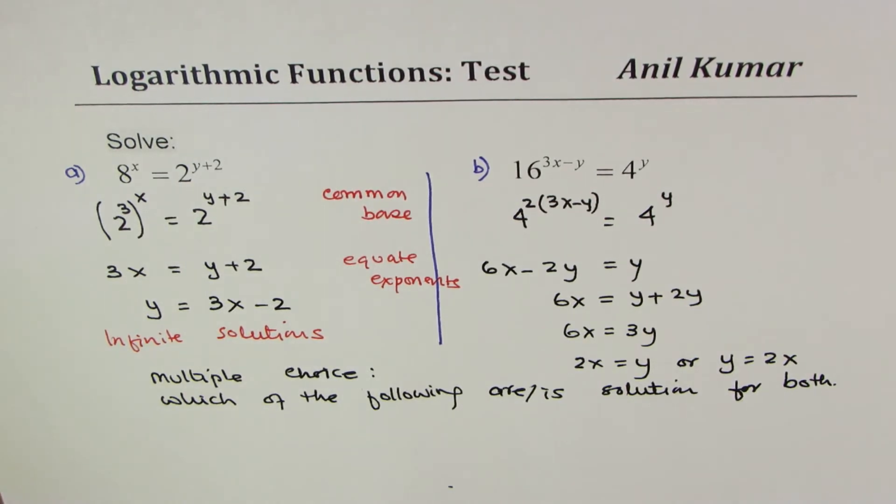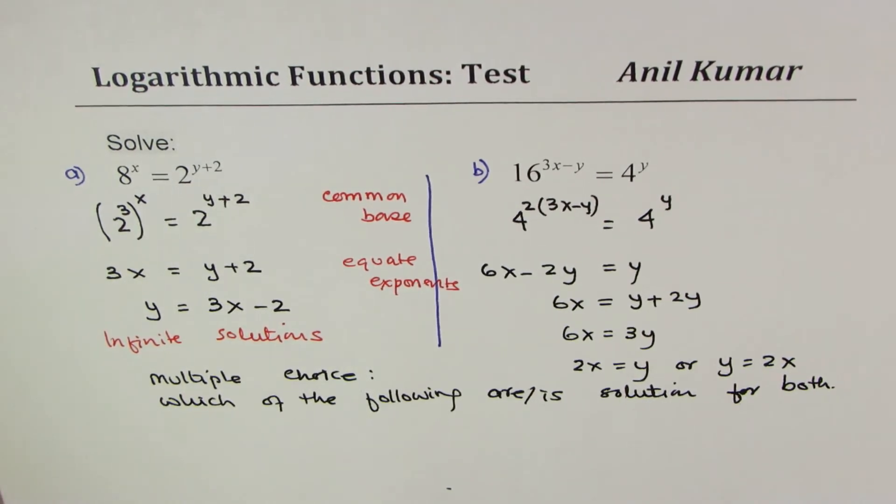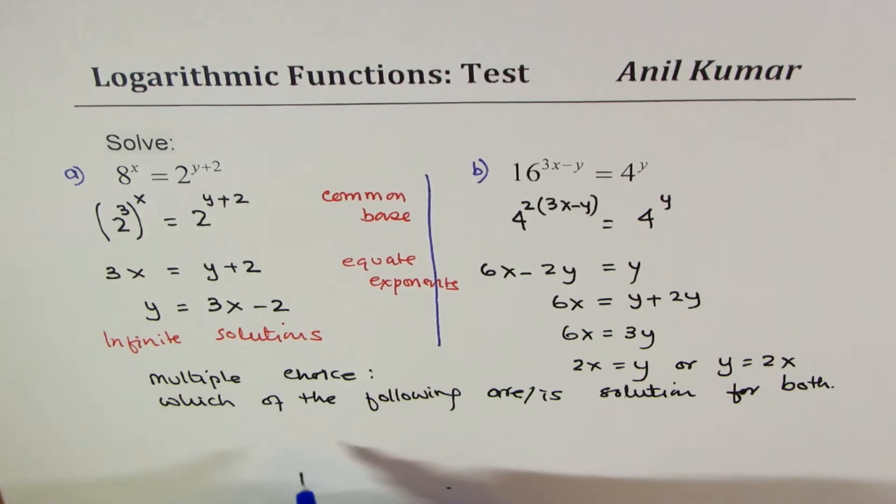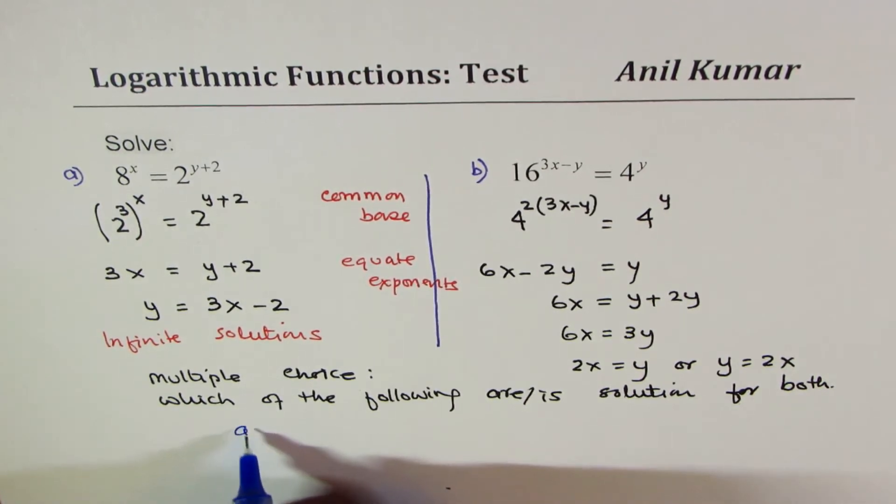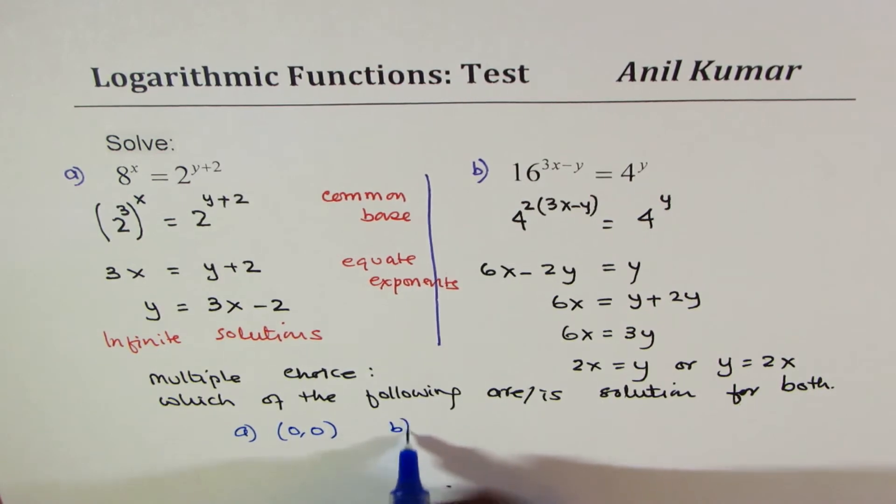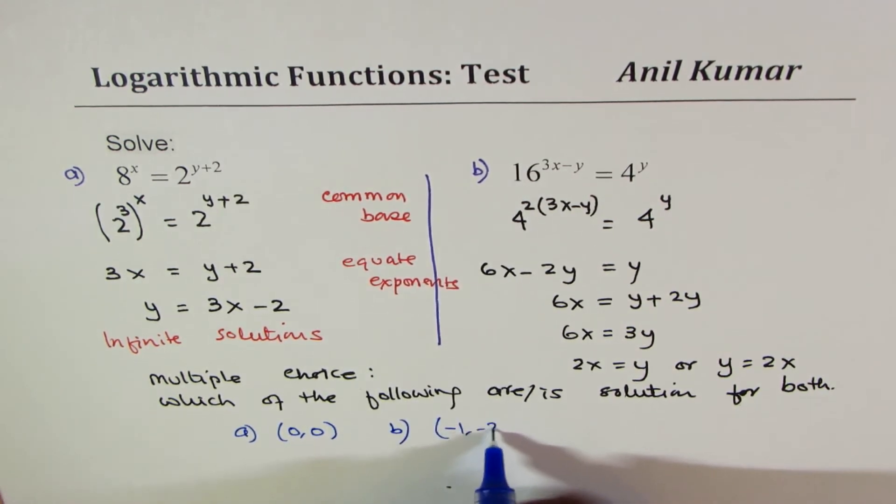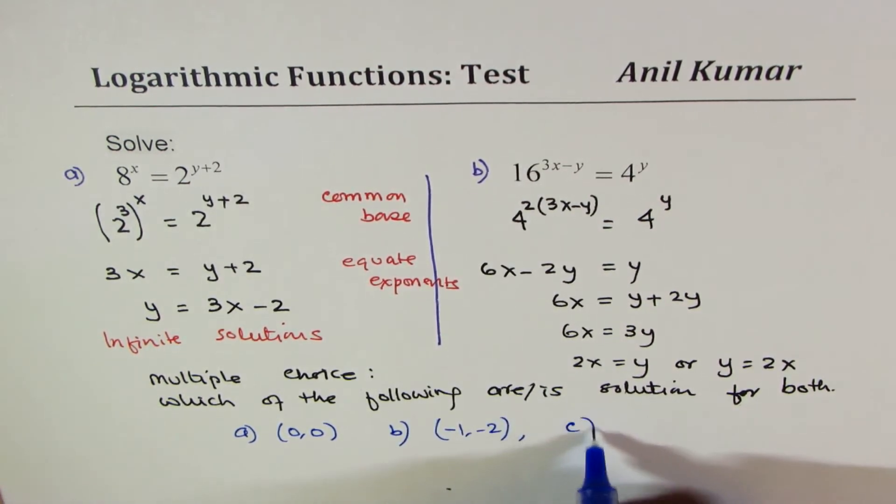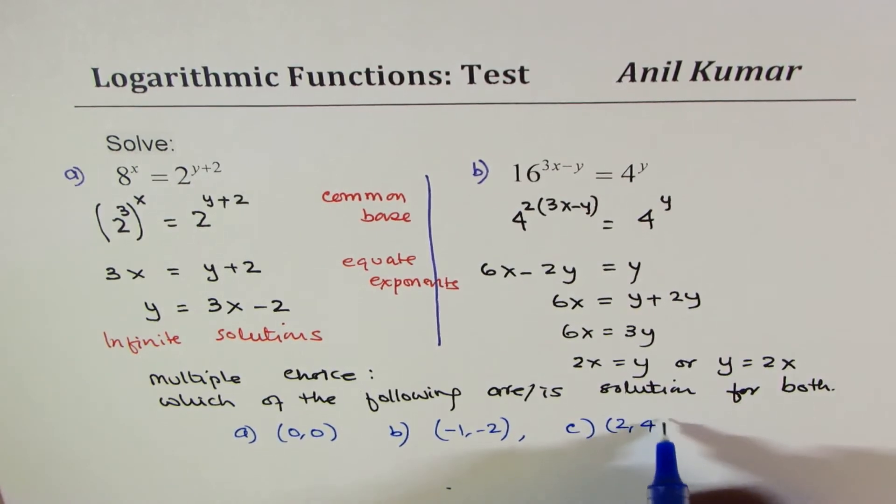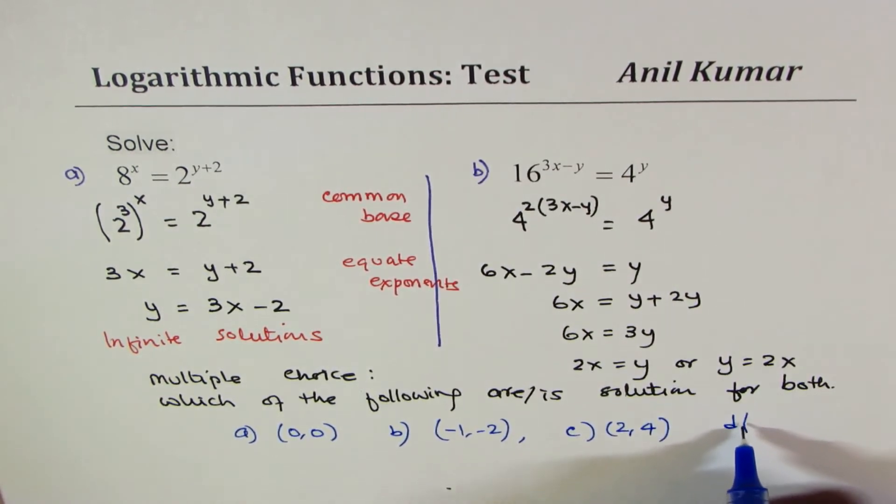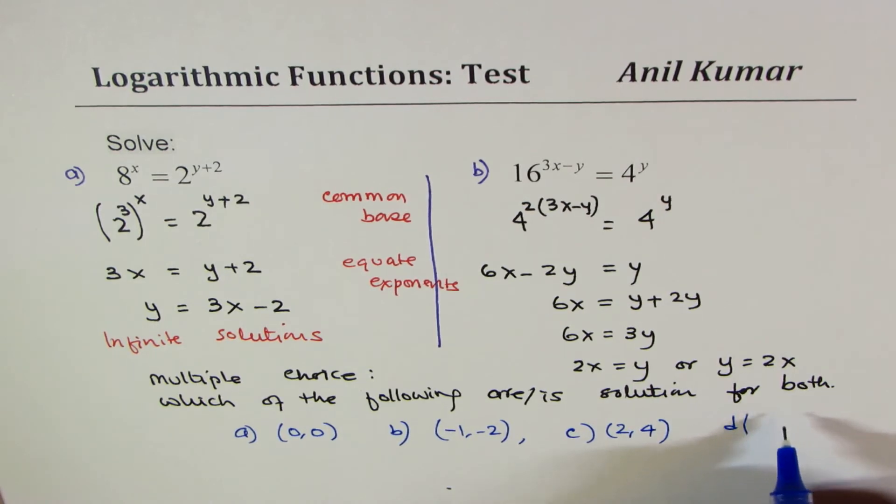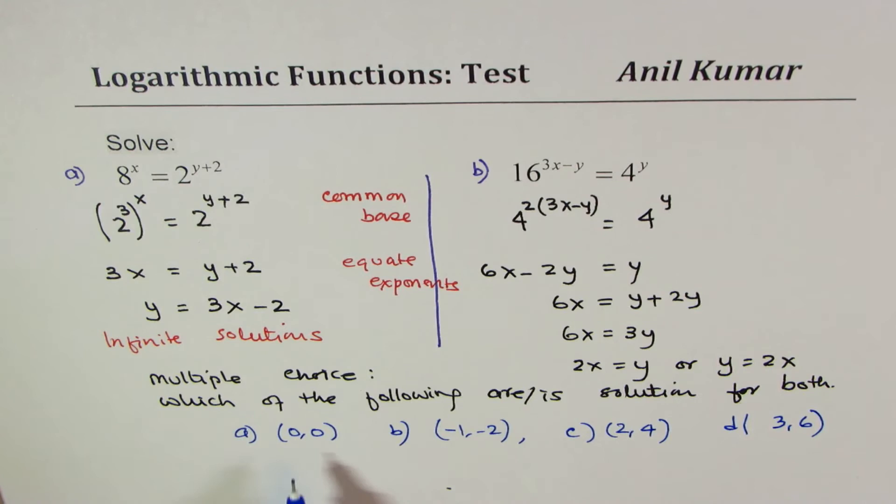I'll give you choices here, and you need to figure out which one of those are solutions for both. There could be solutions, so: a is the point (0,0), b is the point (-1,-2), c is (2,4), and d is (3,6).